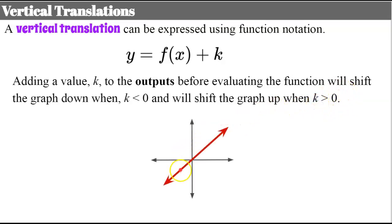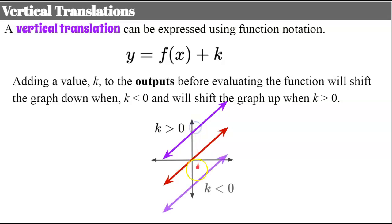Here's our parent function. When K is greater than zero, we see it shift up the y-axis. When K is less than zero, we see it transform down the y-axis.